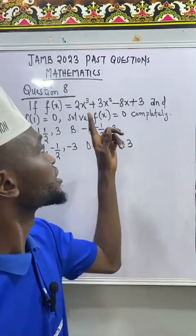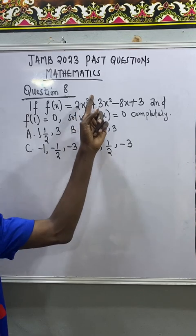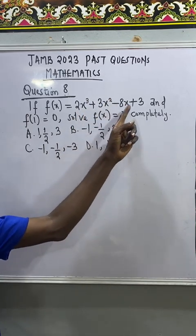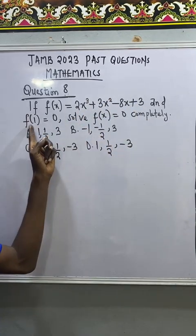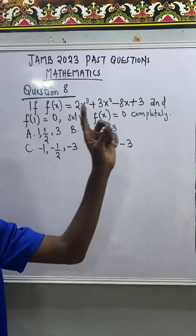Question 8, mathematics. If f of x equal to 2x cubed plus 3x squared minus 8x plus 3 and f of 1 equal to 0, solve f of x equal to 0 completely.